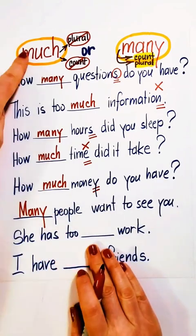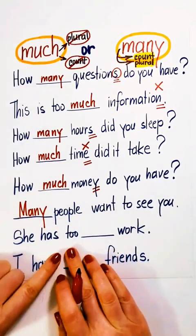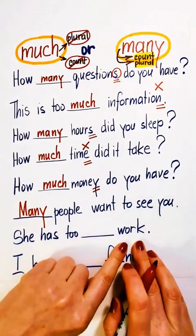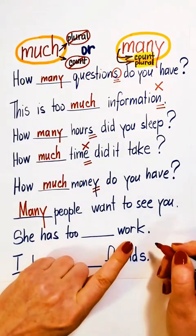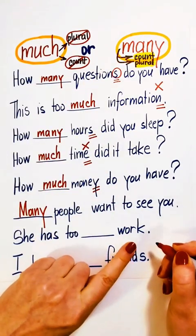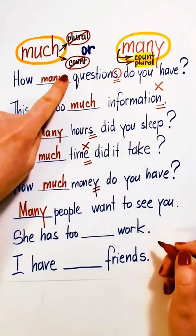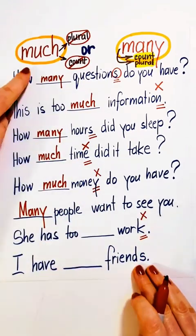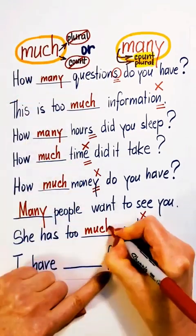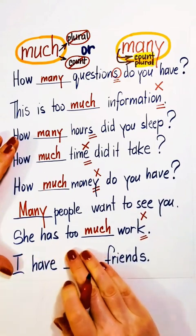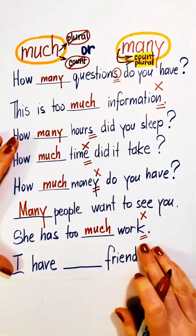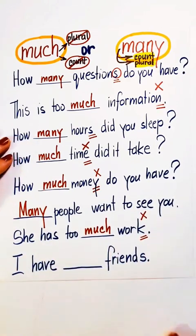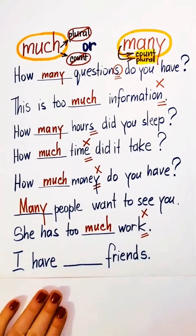She has too much or too many work? Work is a non-count noun. It doesn't have a plural. Use much. She has too much work.